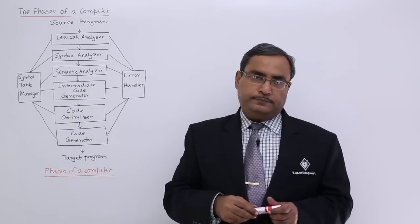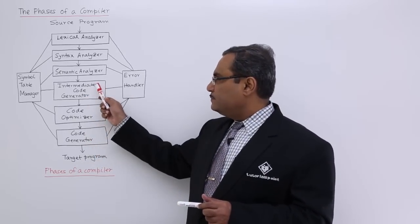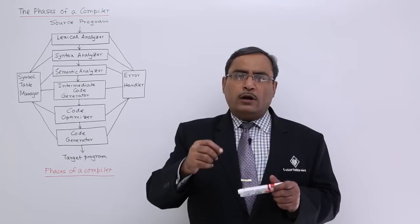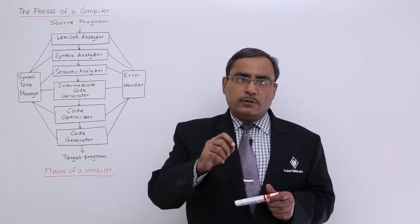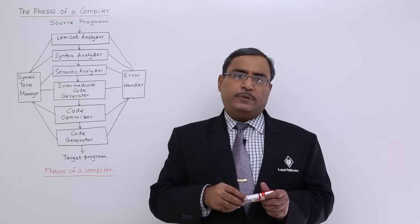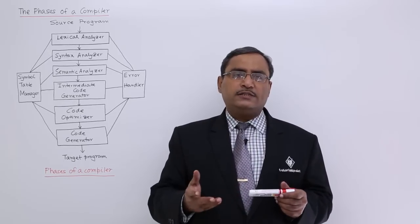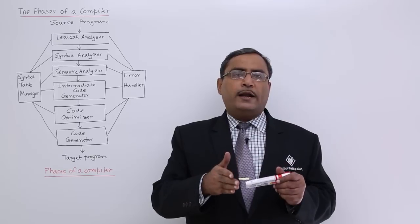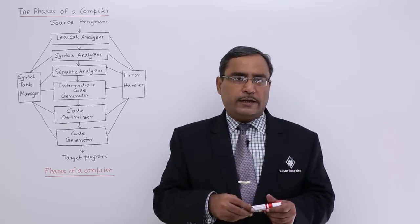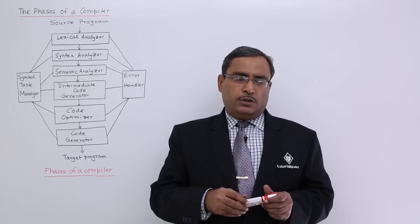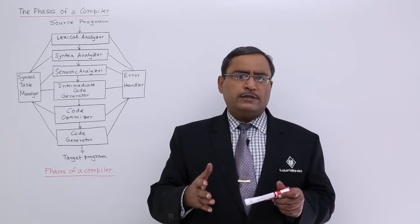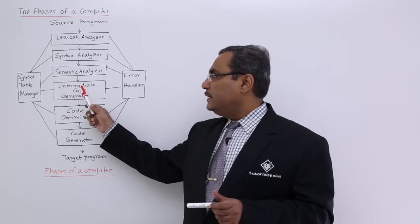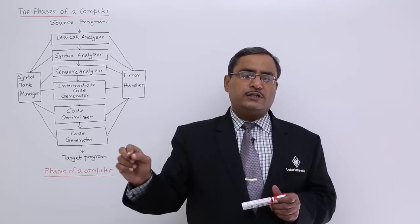In the intermediate code generator phase, each and every high-level language statement will be converted into one or more three-address statements, writing the program in some intermediate language. The three-address statement has three addresses other than the operator: source operand 1, source operand 2, and the target operand. The details of three-address code, quadruples, and triples will be discussed in later videos. For now, remember that the intermediate code generator translates each line to the respective intermediate language.